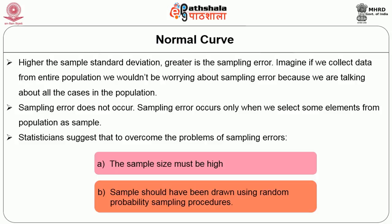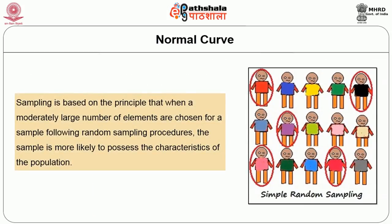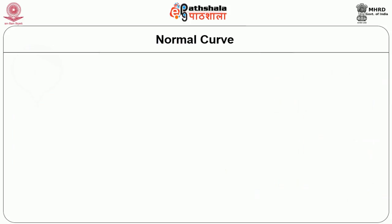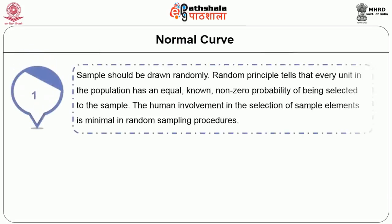Statisticians suggest that to overcome the problems of sampling errors, the sample size must be high and the sample should be drawn using random probability sampling procedures. This takes us to the principle of sampling. Sampling is based on the principle that when a moderately large number of elements are chosen following random sampling procedures, the sample is more likely to possess the characteristics of the population. Inherent to this principle are two conditions. First, the sample should be drawn randomly — that is, every unit in the population has an equal, known, non-zero probability of being selected. Human involvement in the selection is minimal in random sampling.